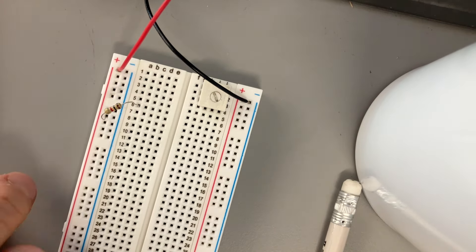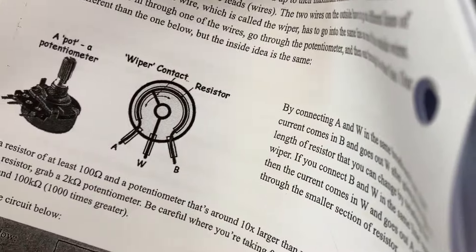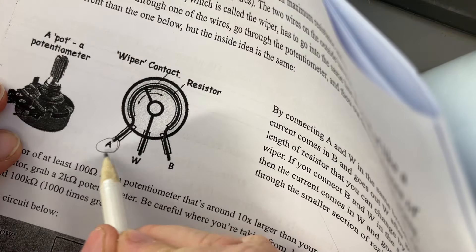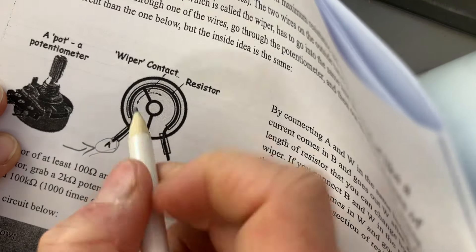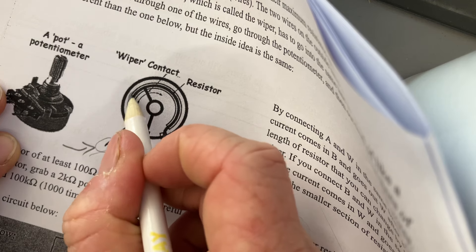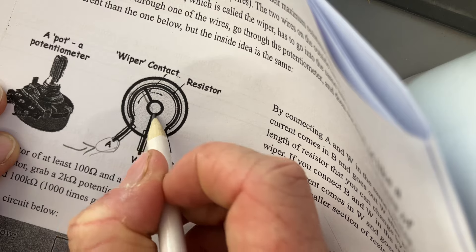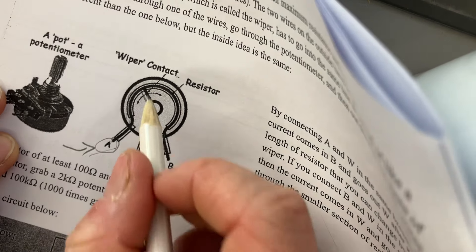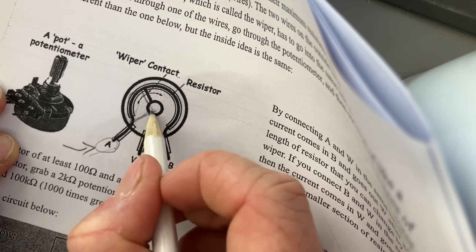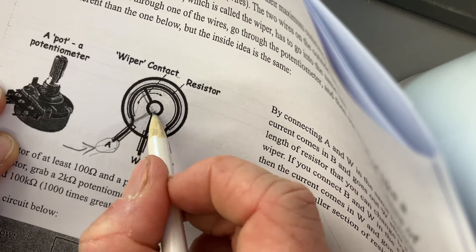The way that a potentiometer works is it comes in through one of the outside pins. So the current is going to come in this way. Then it's going to go along some part of this resistor right here before going out through the middle pin, which is called the wiper pin, and then continuing on with the circuit. This wiper pin can move, so I could go all the way down here, and then it would come in through A, go through no resistance before going out the wiper.